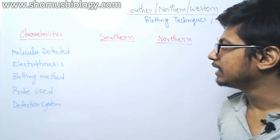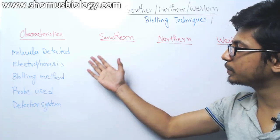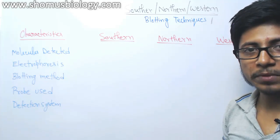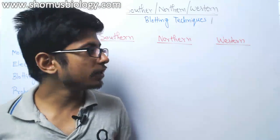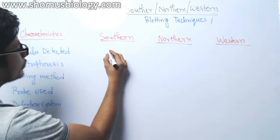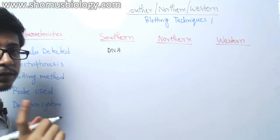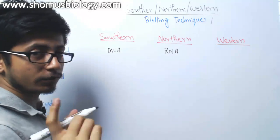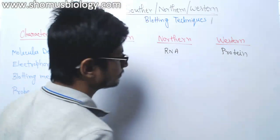If you look at here, we will be seeing some characteristics and the differences between all three based on these characteristics. Starting with the molecules detected: in southern blotting we detect DNA, in northern blotting we detect RNA, and in western blotting we detect protein.